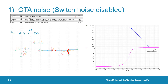Case number one in the amplification phase: we consider only the OTA noise — yes for OTA noise, no for all switch noise sources. From the calculations, the rms output noise voltage is sqrt(1/β) × sqrt(kT / (CL + (1 − β)Cf)), which is 116.4 µV — matching quite well with the simulation result of 116.4 µV.